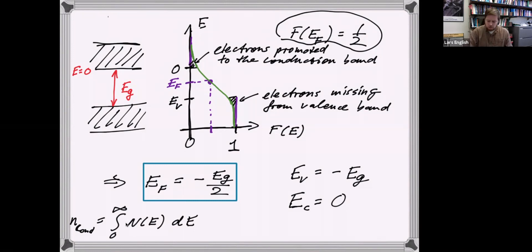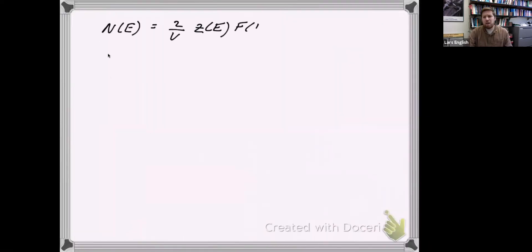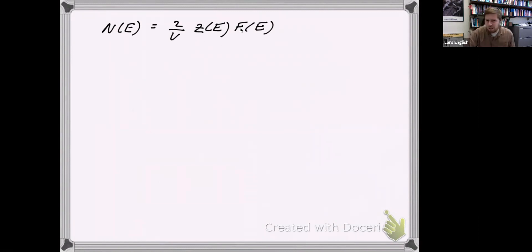The population density is related to the Fermi-Dirac distribution. We multiply the density of states z(e) by the Fermi-Dirac distribution f(e) to get the number of electrons. The density of states z(e) gives how many states exist at each energy, and f(e) gives the probability that a given state is occupied — multiply them together and we get the actual electron count.